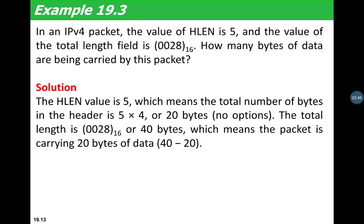Example 3: In an IPv4 packet, HLEN = 5 and the Total Length field is 0x0028 hexadecimal. The total header length is 5 × 4 = 20 bytes. Converting 0x0028 to decimal gives 40 bytes total length. Subtracting the 20-byte header from the 40-byte total gives 20 bytes of data. There are no options, and the packet is carrying 20 bytes of data.